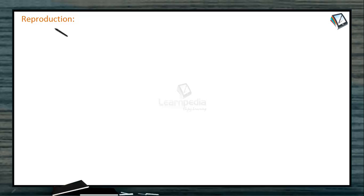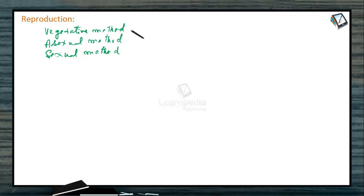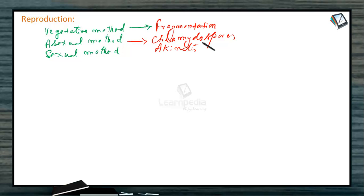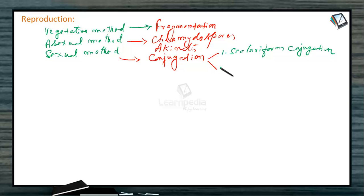Let us consider the reproduction and life cycle of Spirogyra. Spirogyra reproduces by vegetative method, asexual method, and also sexual method. The vegetative method is by fragmentation. Asexual method is by chlamydospores and akinetes. Sexual method is by conjugation, which is of two types: scalariform conjugation and lateral conjugation. Lateral conjugation is again of two types — indirect and direct.